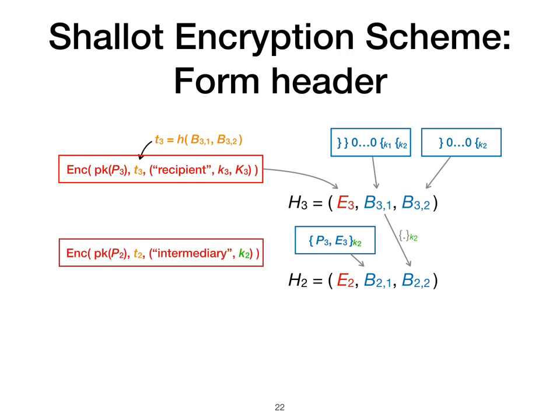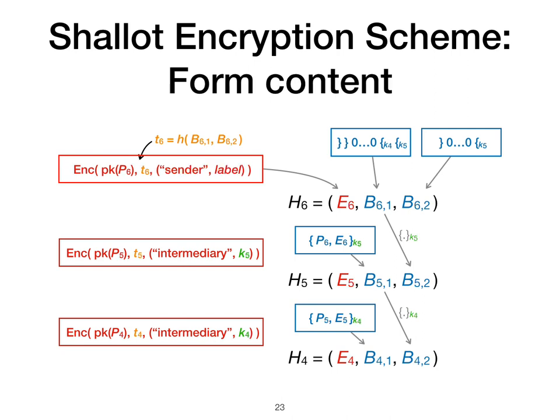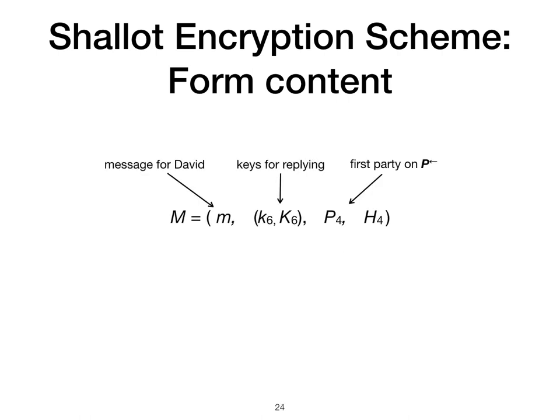We repeat this one last time to get the header H1 for the first intermediary P1. To form the content C1, we first form the header for the return onion in similar fashion. Then the meta-message for the recipient M consists of Alice's message to David (who is also P3), the keys for replying, the first destination on the return path, and the return header. The meta-message along with the MAC tag for the message is encrypted first under the key K3, then the key K2, and finally the key K1. The onion for the first intermediary is O1, which is H1 and C1.